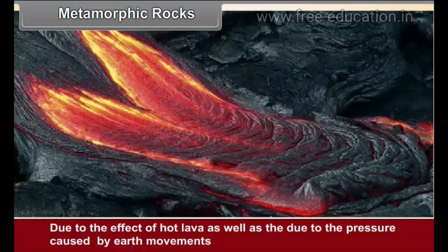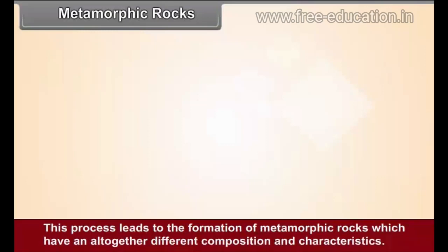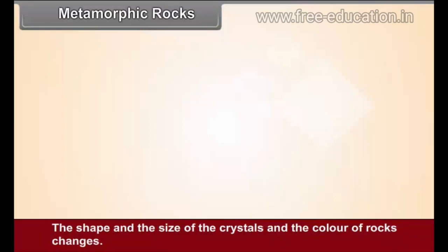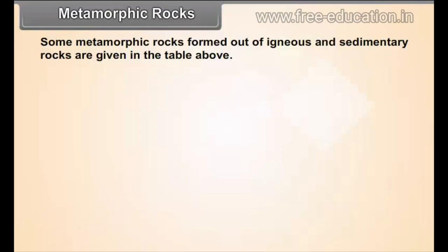Metamorphic Rocks: Due to the effect of hot lava as well as due to the pressure caused by earth movements, the crystals in the original rocks — igneous or sedimentary — get crystallized again. This process leads to the formation of metamorphic rocks, which have an altogether different composition and characteristics. The shape and size of the crystals and the color of the rock changes. As these rocks are produced through the process of recrystallization, metamorphic rocks do not contain fossils. Some metamorphic rocks formed out of igneous and sedimentary rocks are given in the table.